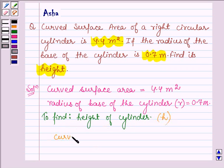Now, the curved surface area is 4.4 m². The formula to calculate the curved surface area of a cylinder is 2πrh. So 2πrh = 4.4 m².